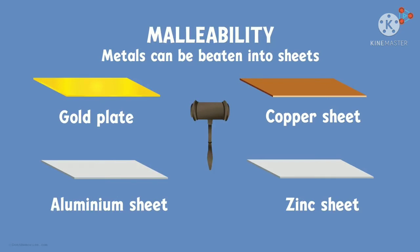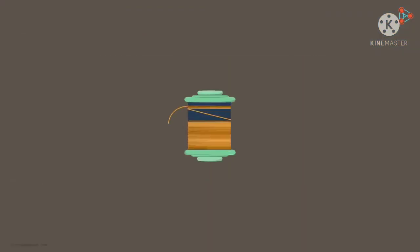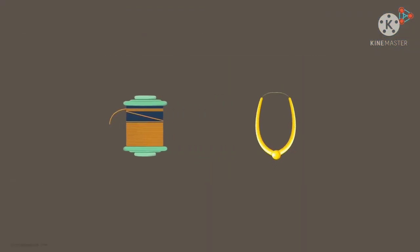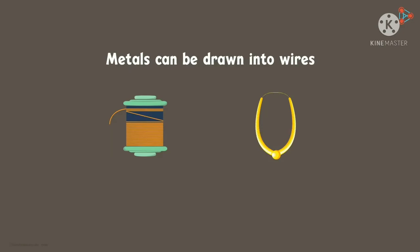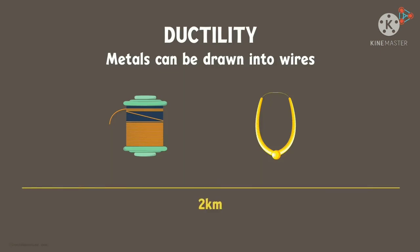Do you know another important property of metals? Have you ever seen copper wires or thin gold wires used to make jewelry? Metals by nature can also be drawn into wires. Do you have any clue as to what this property is called? It is called ductility of metals — the ability of metals to be drawn into wires. There is an amazing fact: a single gram of gold can be drawn into a 2 km long wire. Isn't that amazing?